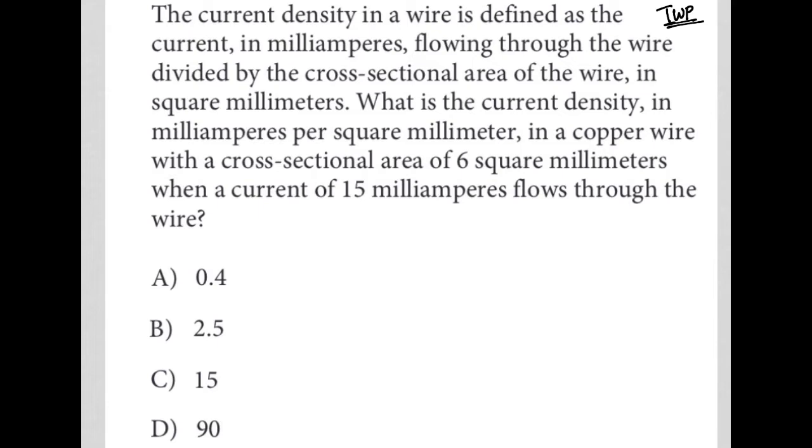So, the very first sentence here says the current density in a wire is defined as the current in milliamperes flowing through the wire divided by the cross-sectional area of the wire in square millimeters. I'm going to say then that current, I'm going to say C is current. So, this very first sentence is literally giving me a mathematical equation. I want to write it down.